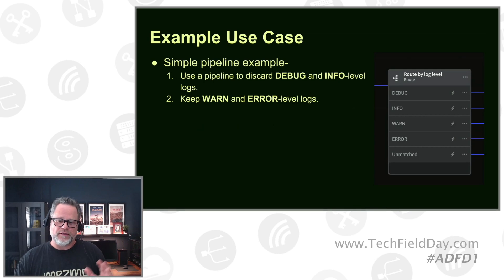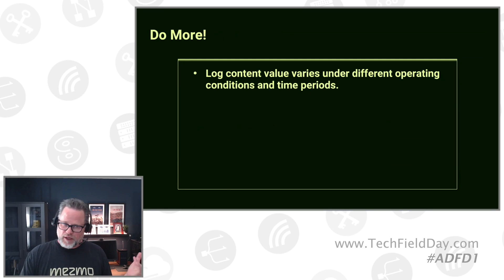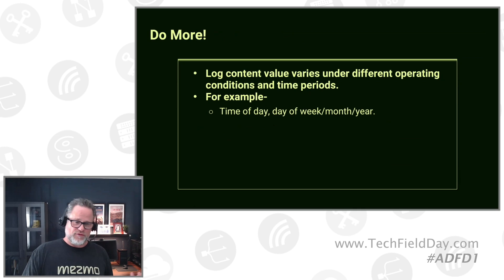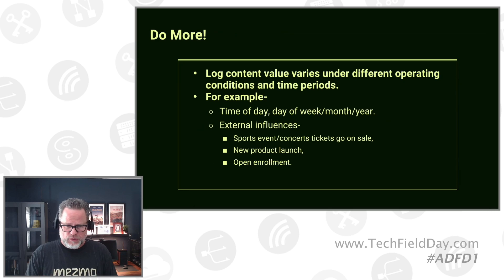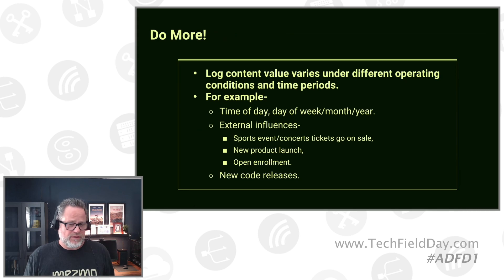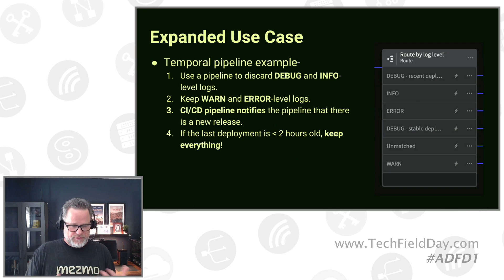That's a simple use case of filtering debug and info-level logs, but it's just the tip of the iceberg. Log content varies under different operating conditions and time periods — time of day, day of week, month, year. Different external influences can affect the types or criticality of logs: new tickets going on sale, a new product launch, open enrollment, or even a new code release. Let's look at an example of extending that simple use case into one that has more of a temporal aspect.